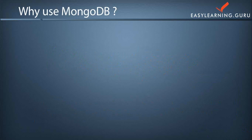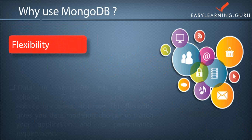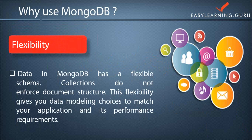Why do we use MongoDB? The very first feature is flexibility. Flexibility means that you can add any type of data into the database. Data in MongoDB has a flexible schema. Collections do not enforce document structure, so this flexibility gives you data modeling choices to match your application and its performance requirements. You can dynamically modify the schema without downtime and spend less time preparing your data for the database.